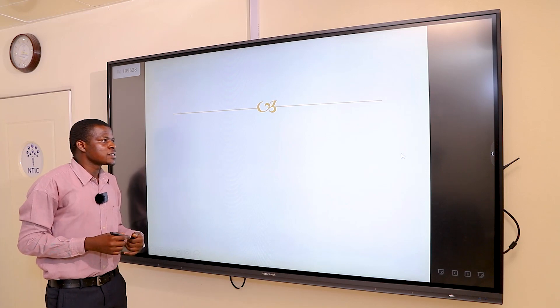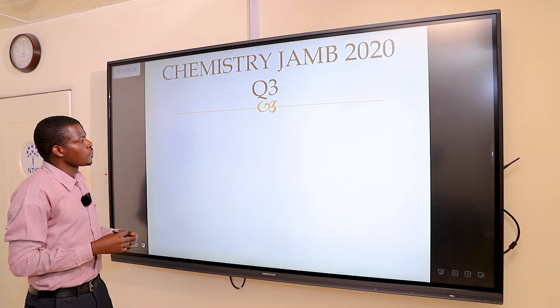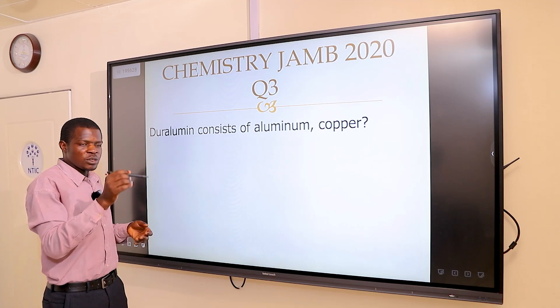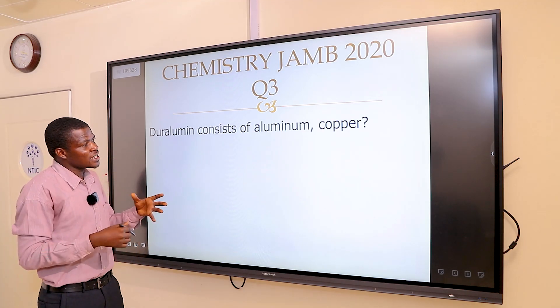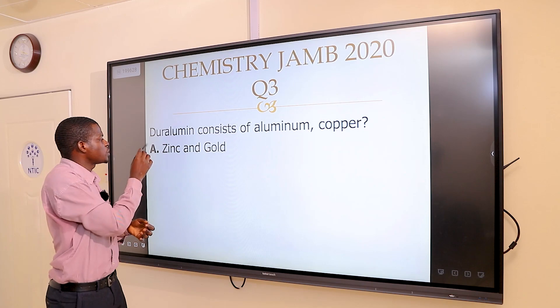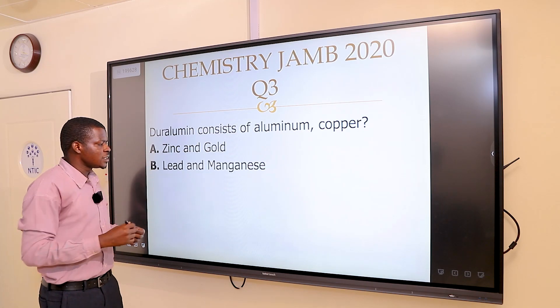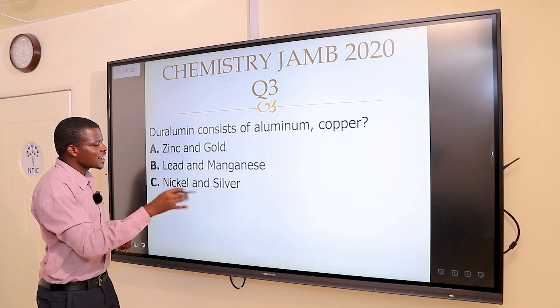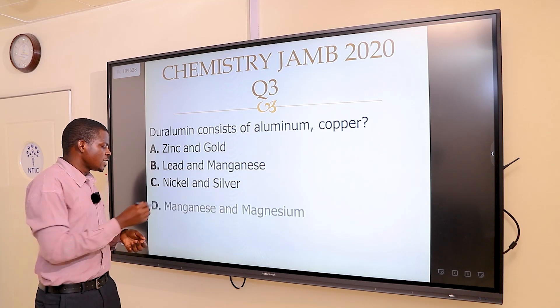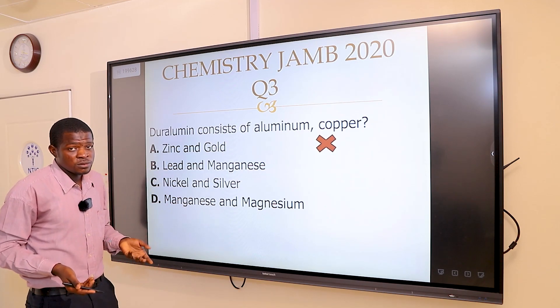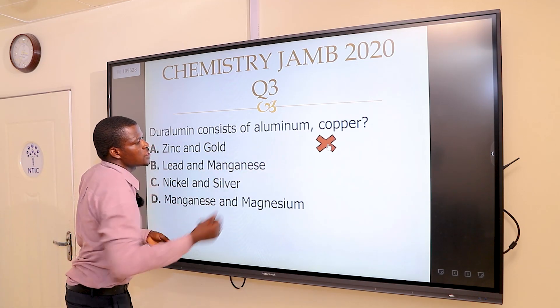Question 3 says: duralumin consists of aluminum, copper, and which other elements? Option A: zinc and gold. Option B: lead and manganese. Option C: nickel and silver. Option D: manganese and magnesium. The question must be: which of these options are correct?